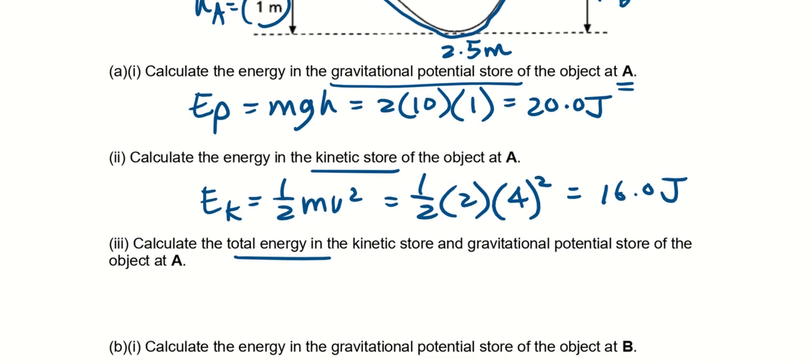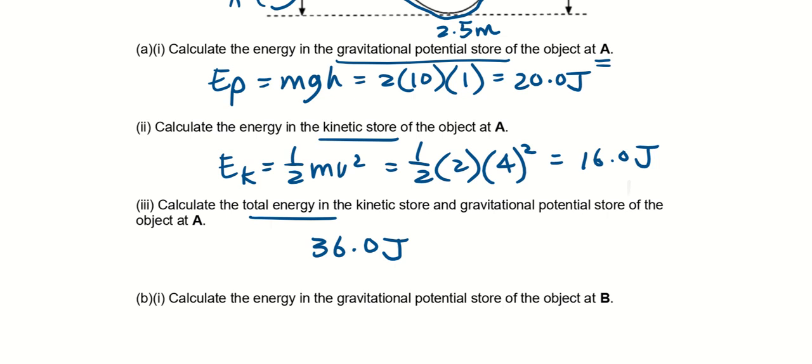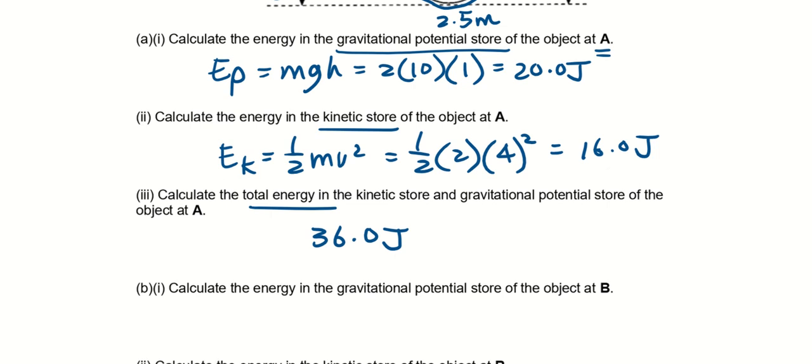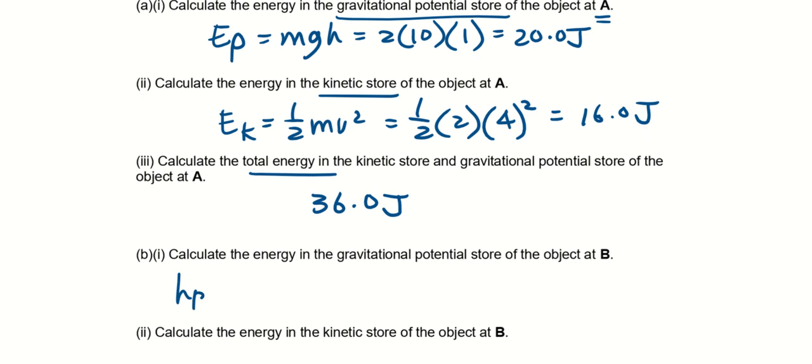Calculate the energy in the gravitational potential store of the object at B. At B the height is 1.4 meters, so it goes to mgh, the mass there's no change.